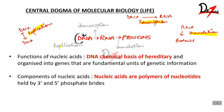What is the function of nucleic acid? DNA is the chemical basis of heredity — it determines how our genes are transferred from our parents to us and so on. These are organized into genes that are the fundamental units of genetic information. Now the components of nucleic acids: nucleic acids are basically polymers of nucleotides which are held together by 3' and 5' phosphate bridges.